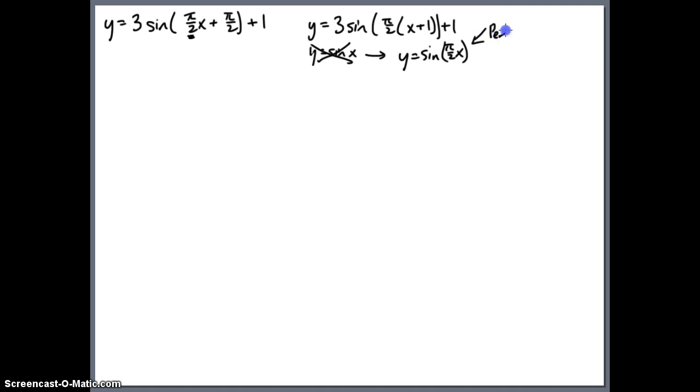The period, just by the formula, is 2 pi over absolute value of b. So you plug in 2 pi over pi over 2. And when you rewrite this, you have 2 pi times 2 over pi. The pi's cancel and you're actually left with a period of 4.